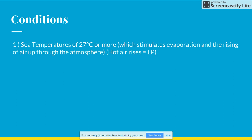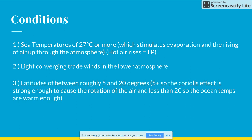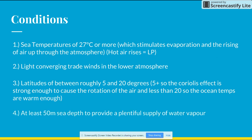Sea temperatures of 27 degrees or more, which stimulates evaporation and the rising of air through the atmosphere. Light converging trade winds in the lower atmosphere. Latitudes of roughly 5 to 20 degrees — 5 or more, so the Coriolis effect is strong enough to cause the rotation of the air, and less than 20 so ocean temperatures are warm enough. And finally, at least 50 metres depth to provide a plentiful supply of water vapour.